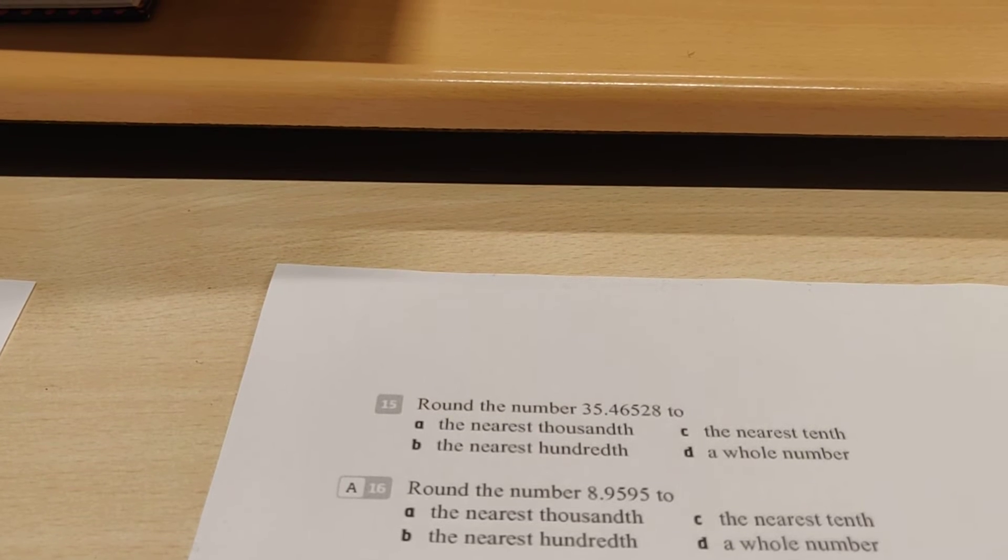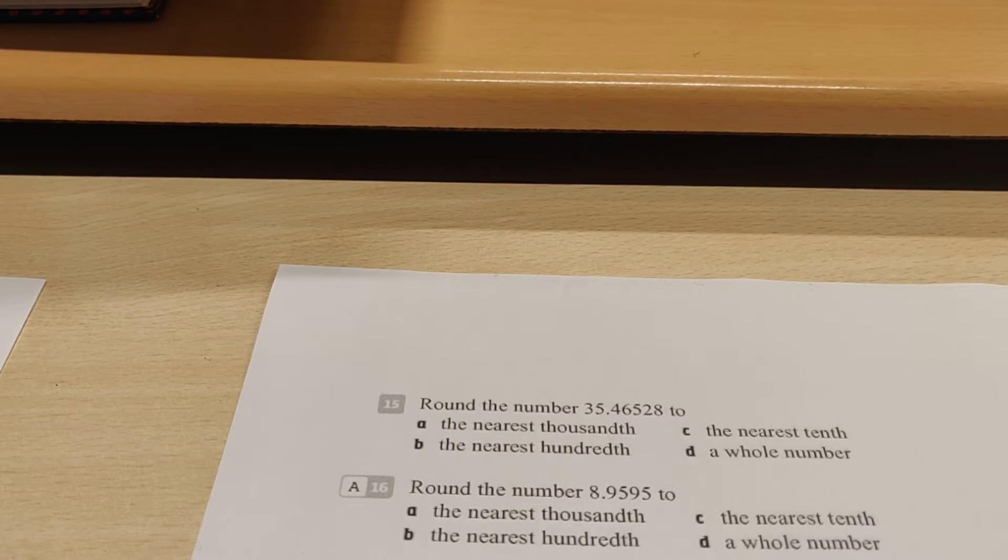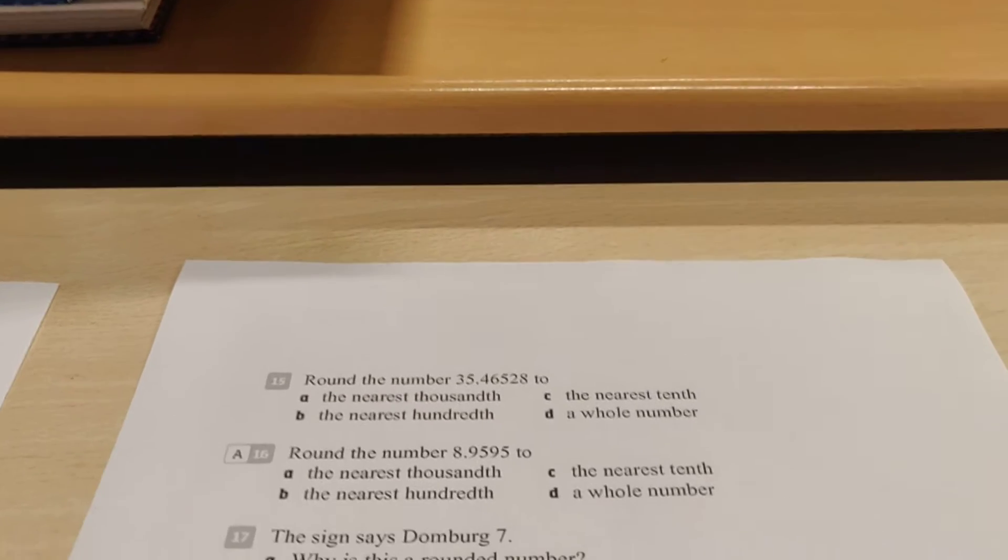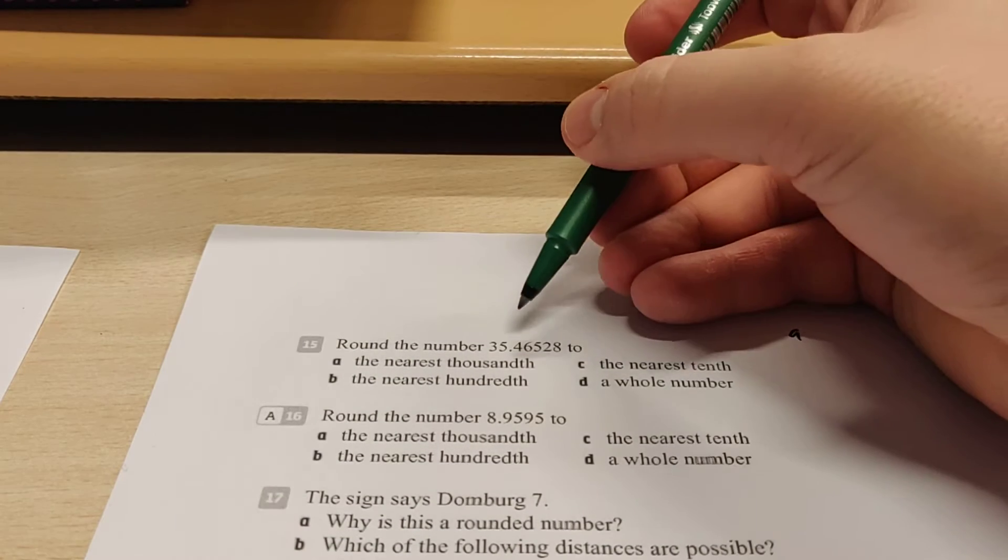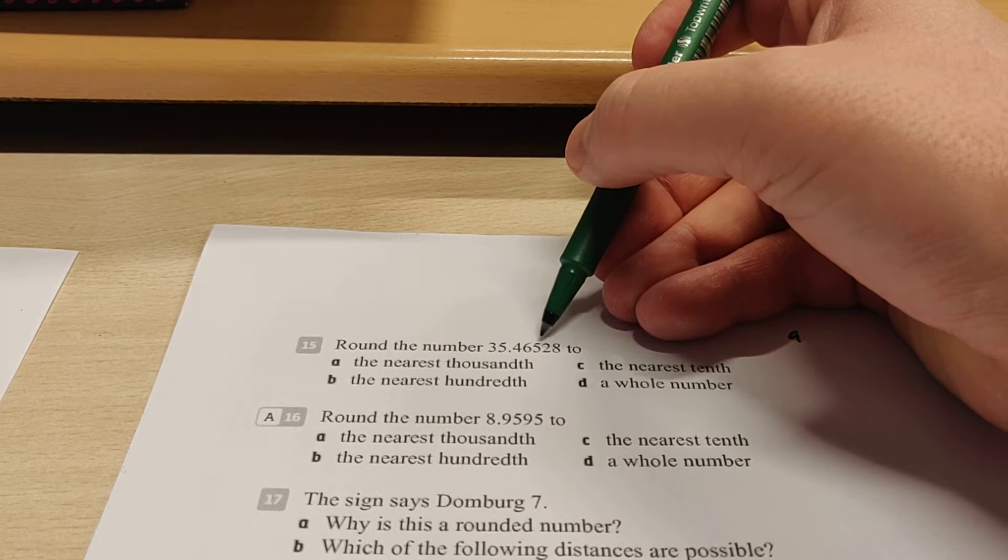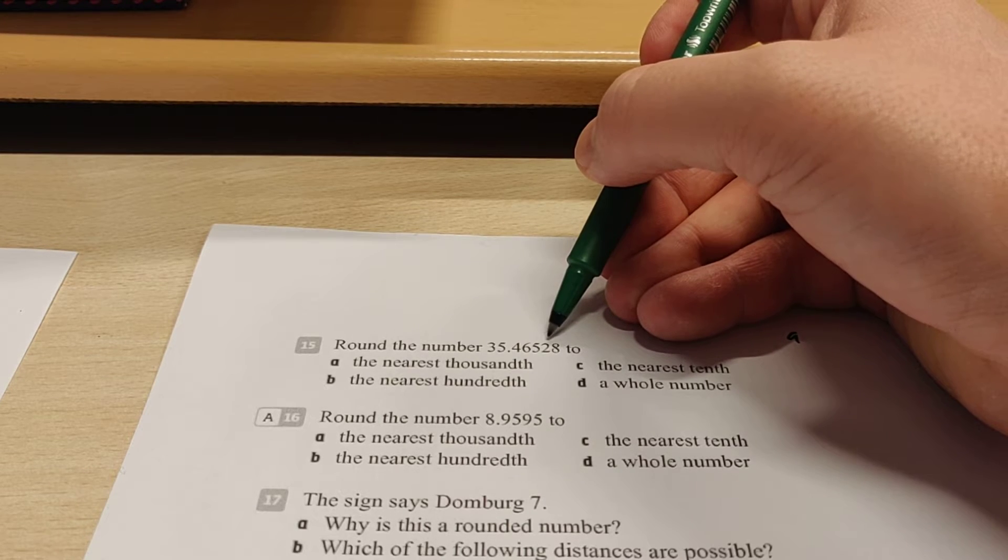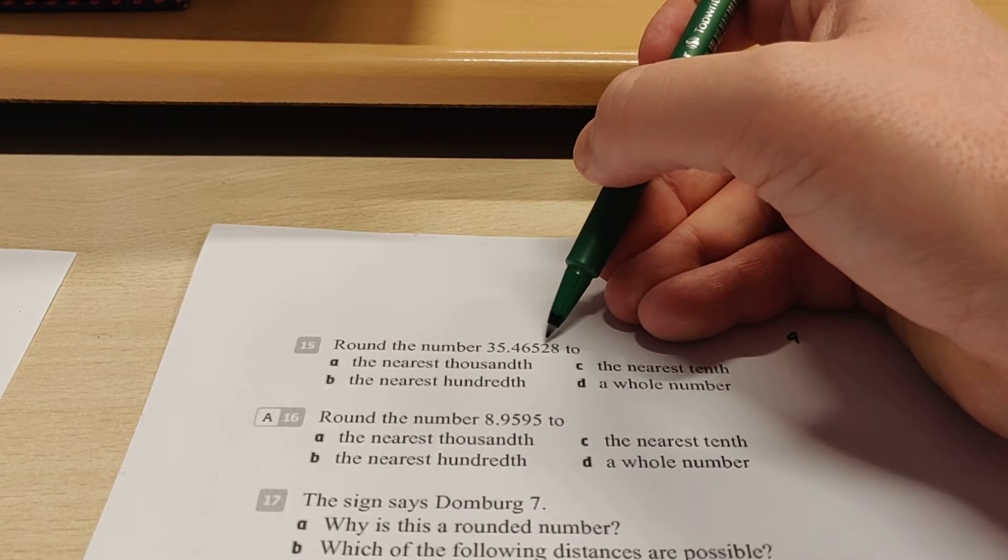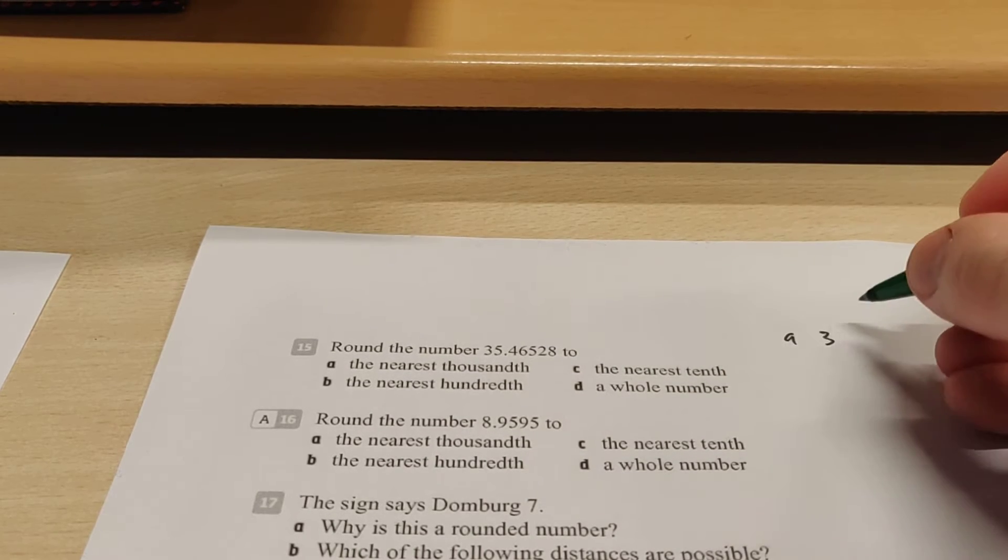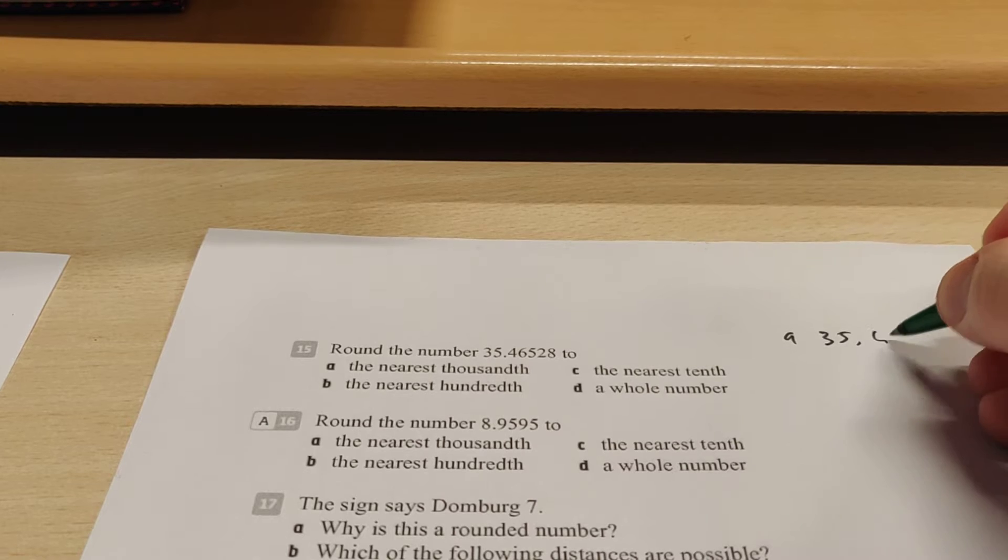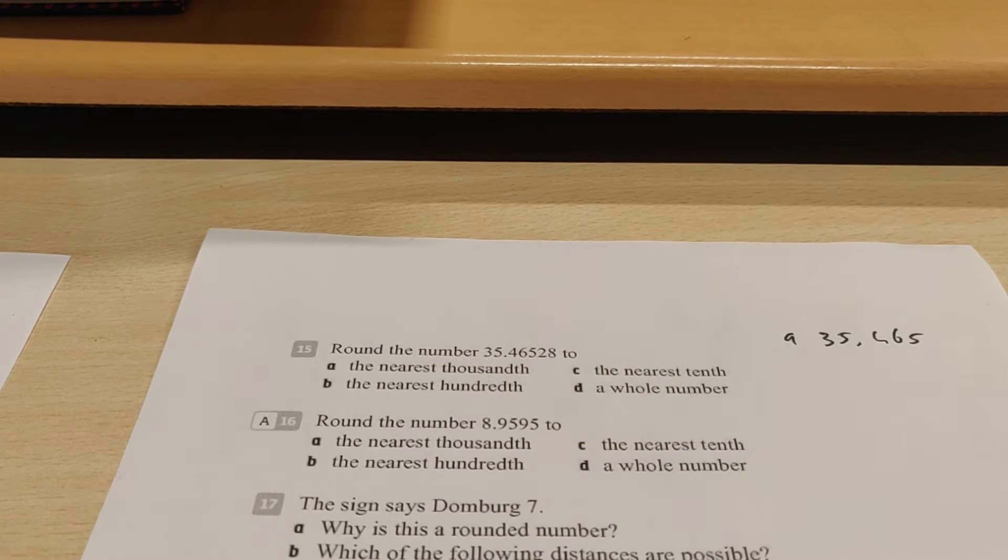So here we have 35.46528. And we need to round it off to the nearest thousandth. So that means that we have to round off to this number, this 5 here. So we're going to take a look at the next number, that's a 2. The 2 is smaller than 5, so that means you round it off downwards. So this stays a 5, so the answer is 35.465. That's the answer.